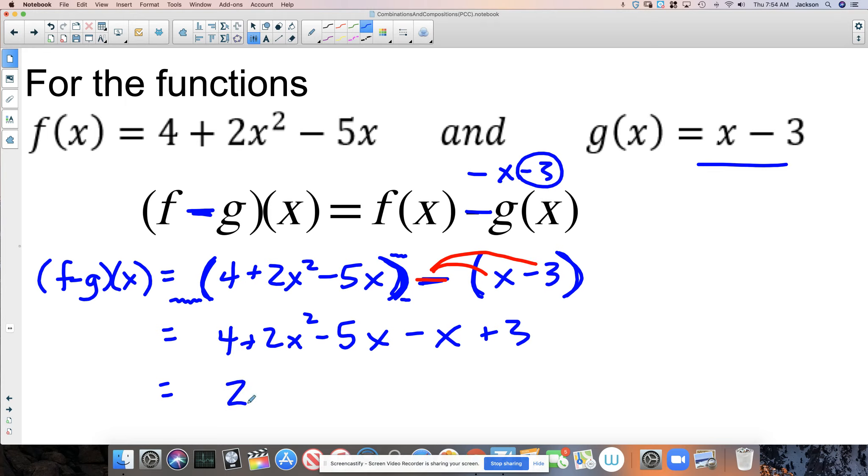Then when we go to combine like terms, we've got 2x squared, minus 5x minus x is negative 6x, and 4 plus 3 is positive 7. So this is our new function f minus g of x created by subtracting those two functions.